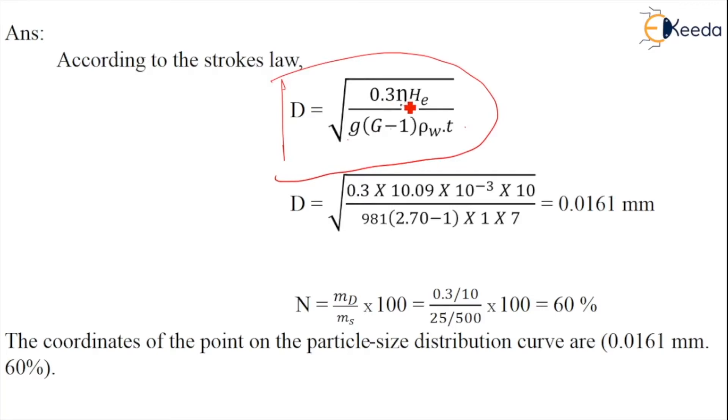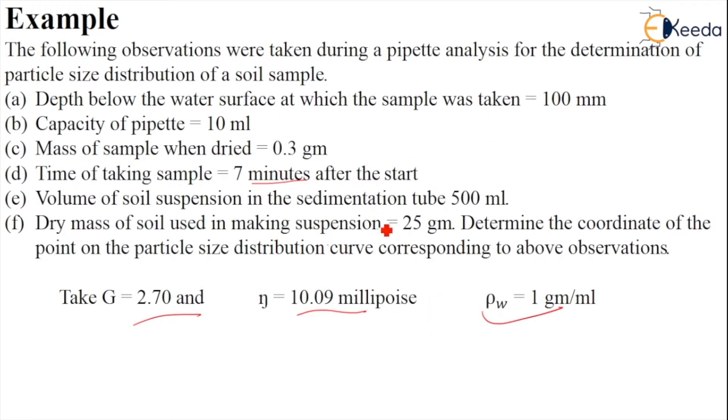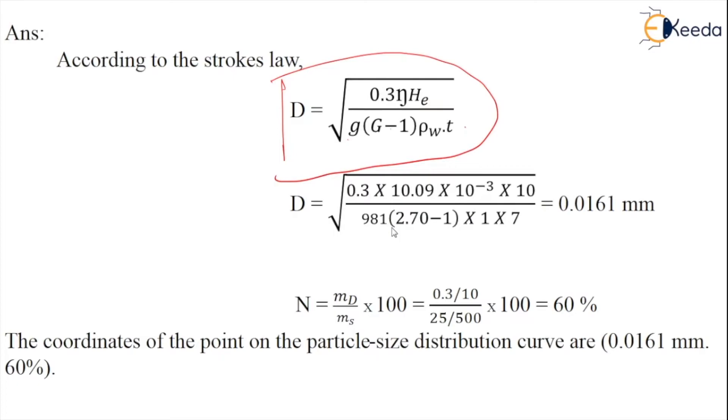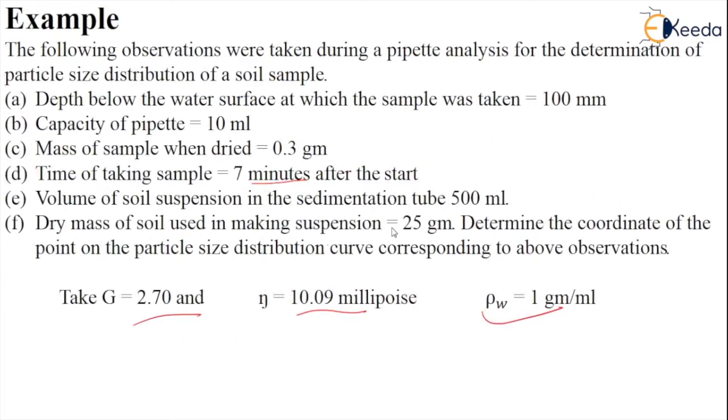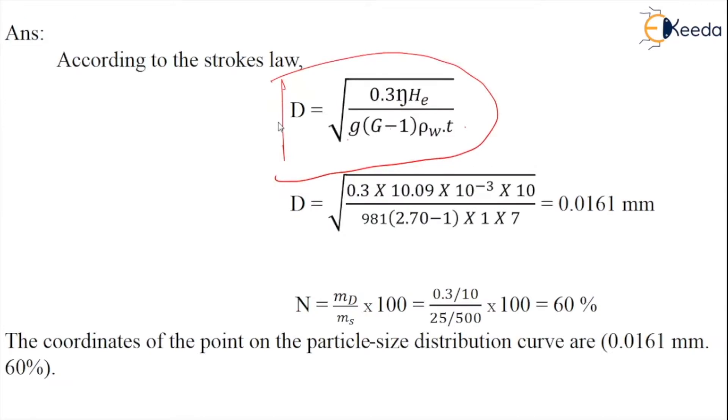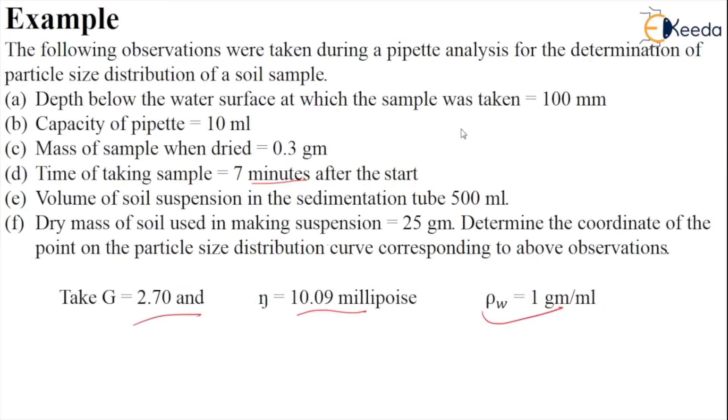The η value is 10.09 millipoise, He value is 10 ml (capacity of the pipette), g is 981, capital G is 2.7, ρw is 1 gram per ml, and t is 7 minutes.